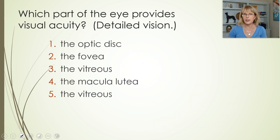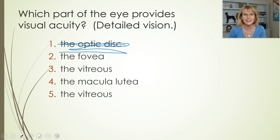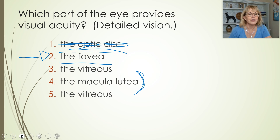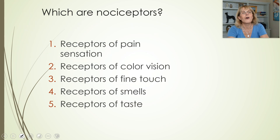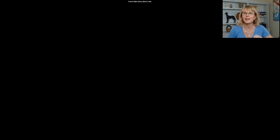What part of the human eye provides the most detailed vision? Check your notes — I'm about to tell you it is not the optic disc, because the optic disc is why you've got a blind spot. The answer is because of the fovea, or fovea centralis. The macula lutea is right around the fovea, so it's not a bad choice, but the right answer is the fovea. Also: what are nociceptors? They're pain receptors. Nociception is the experience of pain.